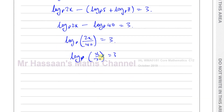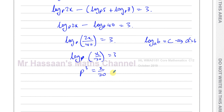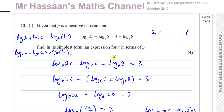Now I'll rewrite in index form. If log base A of B equals C, this can be rewritten as A to the power C equals B. So log base P of x over 20 equals 3 gives us P cubed equals x over 20. Therefore x equals 20 times P cubed. That's the answer to part 1, x written in terms of P.